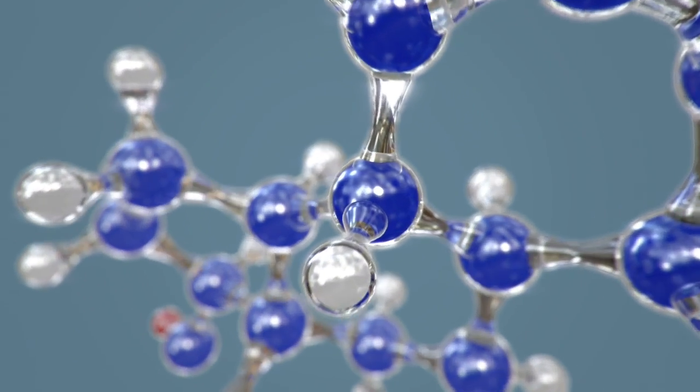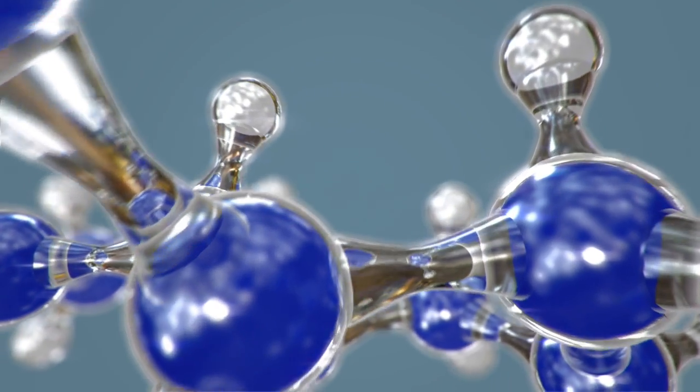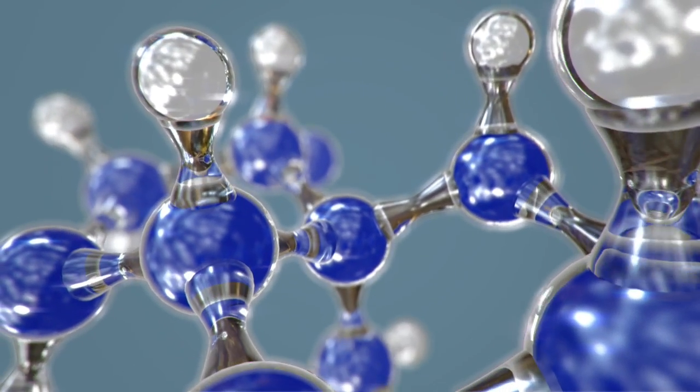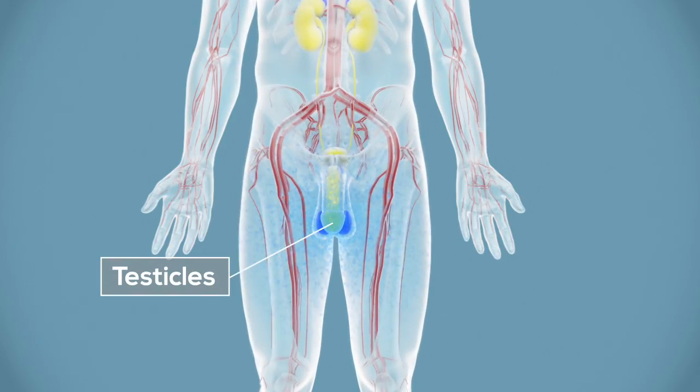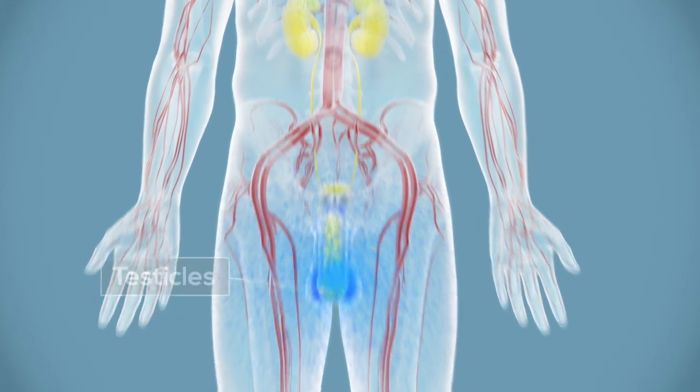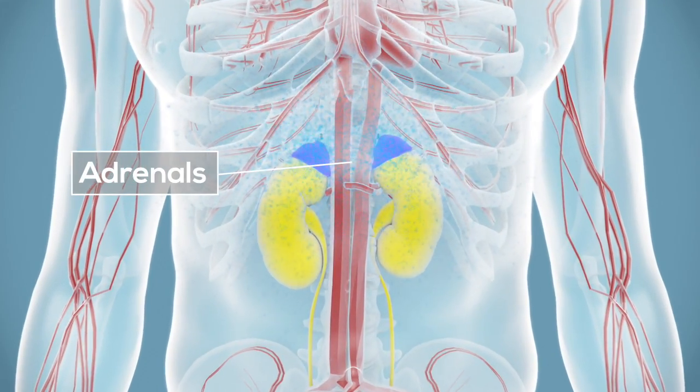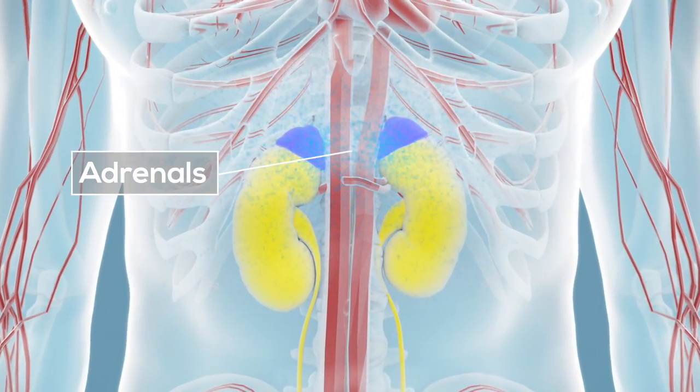Testosterone is a steroid hormone derived from cholesterol that serves as the primary androgen in men. Most of the body's testosterone is produced by the testicles, but a small amount is secreted by the adrenals, small triangular glands located above the kidney.